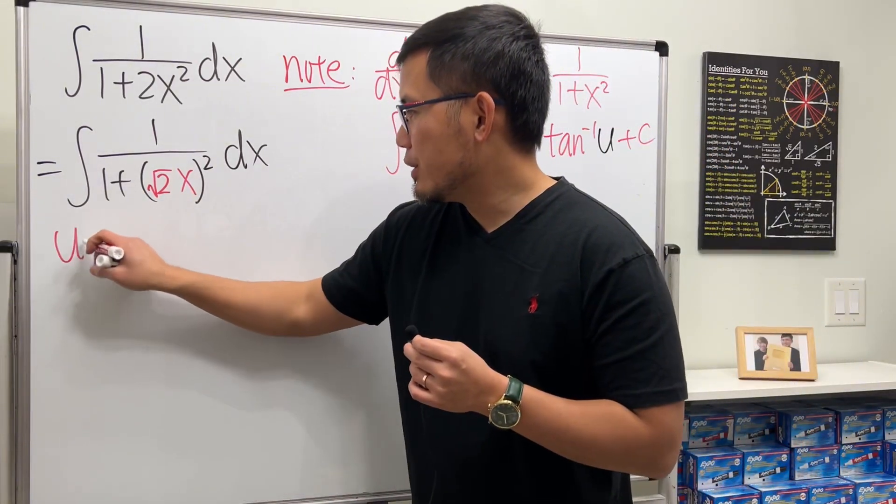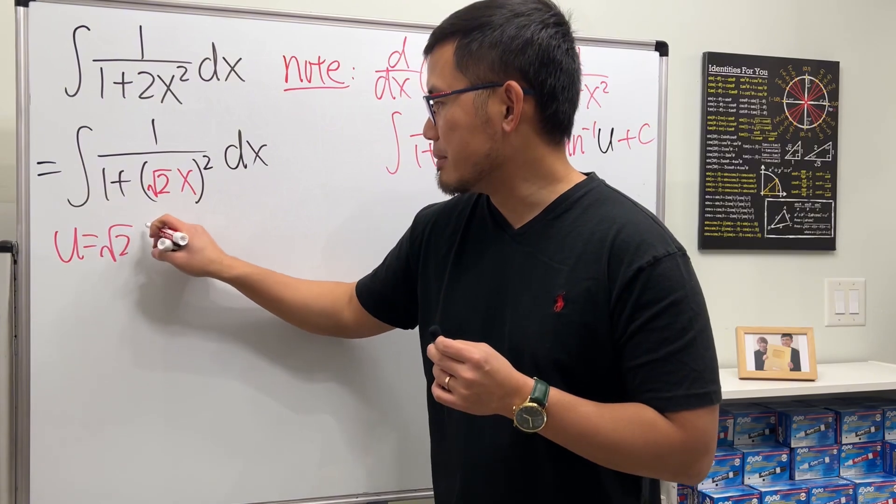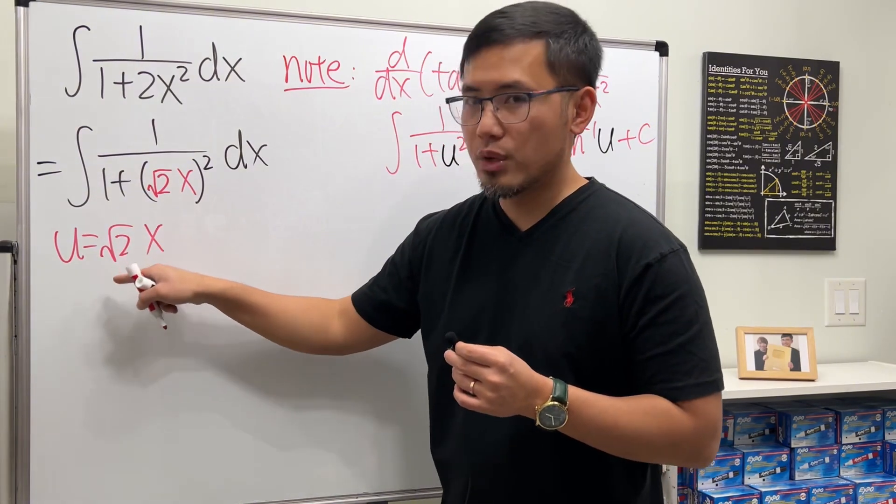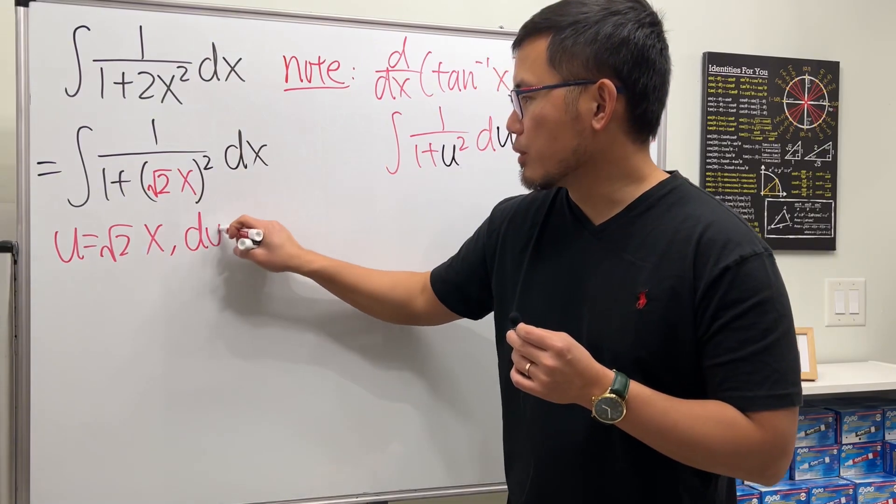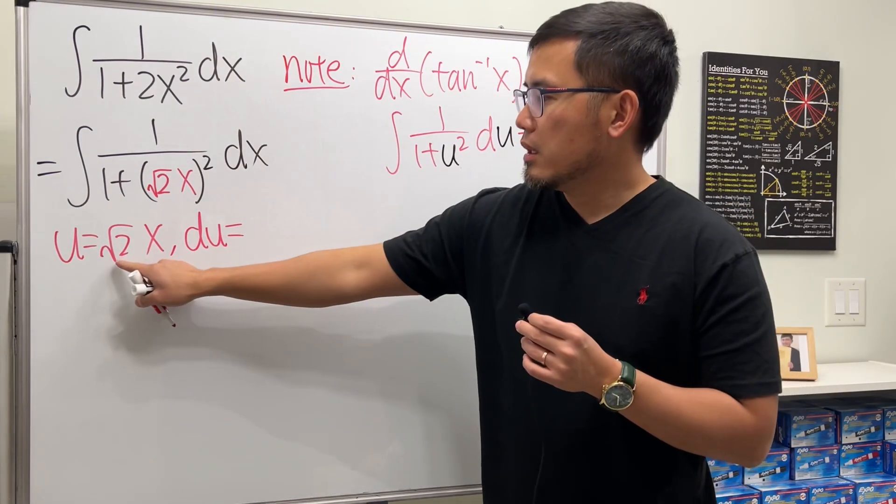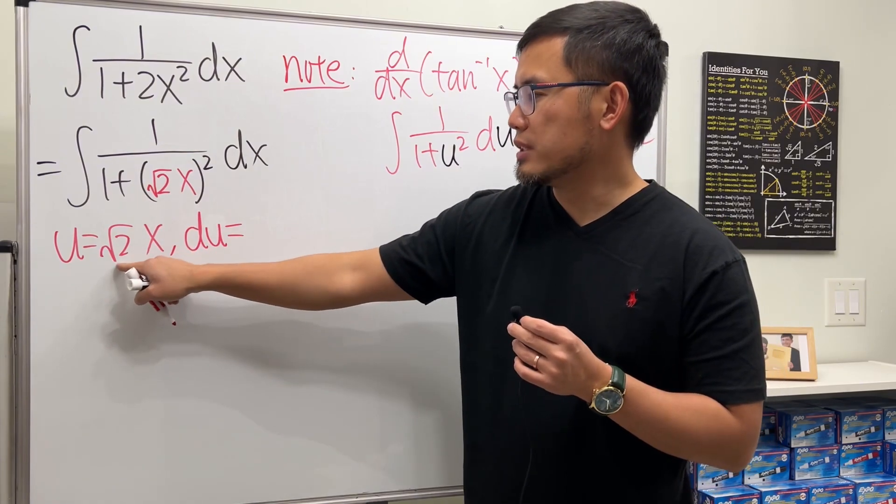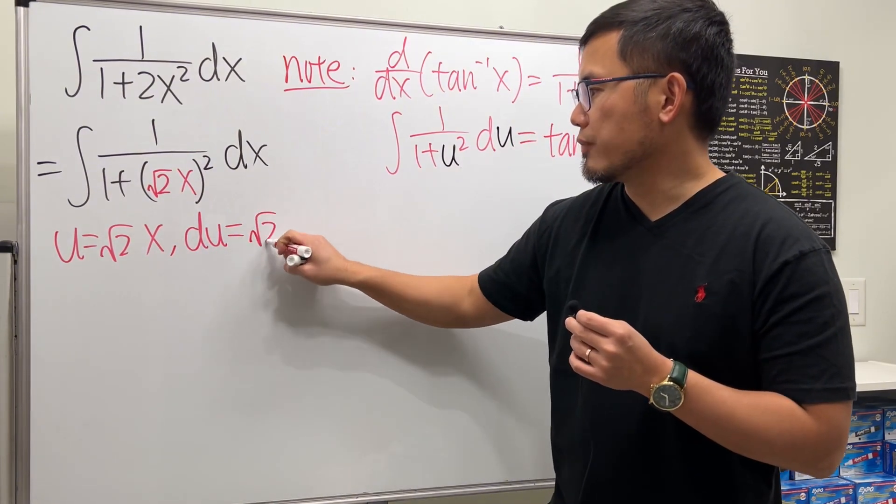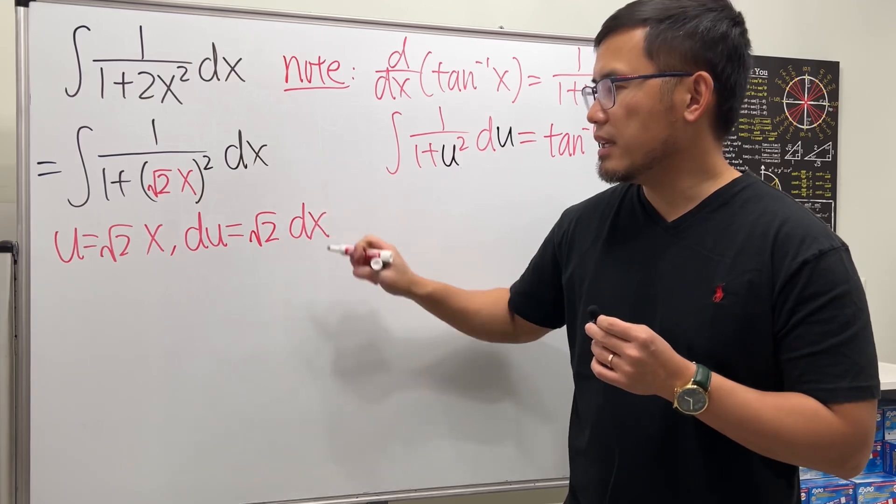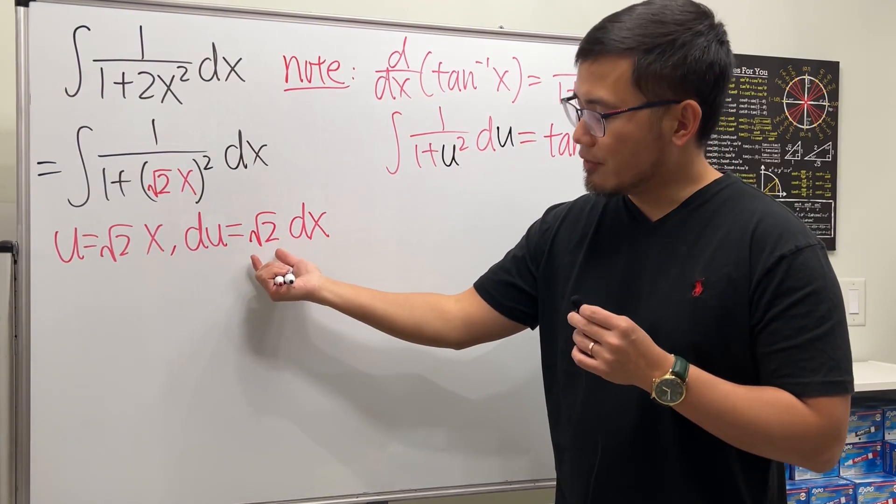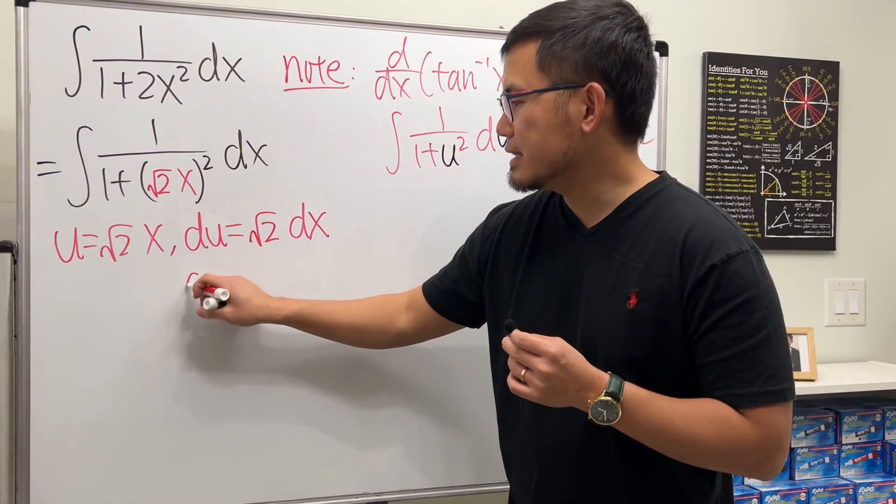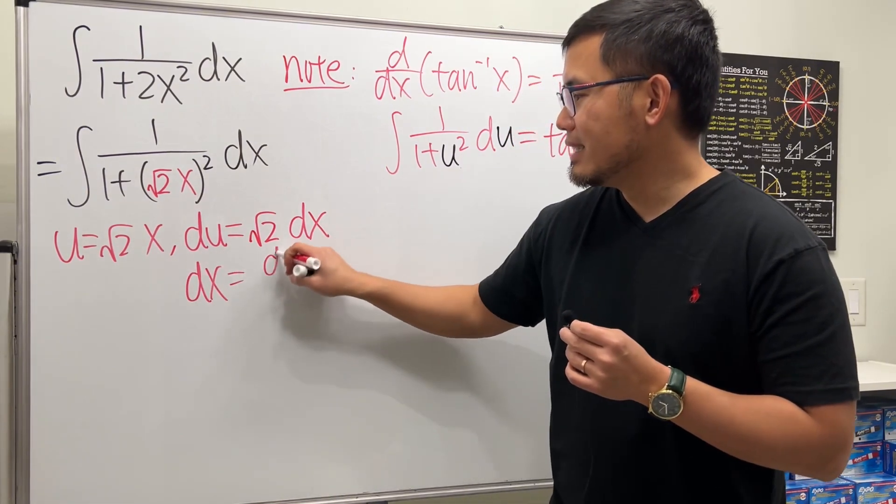So u equals square root of 2 times x. Let's take the derivative: du equals the derivative of this. This is x to the first power, so square root of 2 dx. Let's isolate dx by dividing the square root of 2 on both sides, so dx equals du over square root of 2.